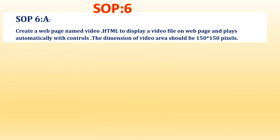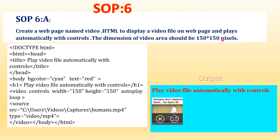Next is SOP 6, which has two parts, A and B. In Part A, create a web page named video.html to display a video file on the web page that plays automatically with controls. The dimension of the video area should be 150 by 150 pixels. It's an HTML5 program with title, head, body. BG color is cyan and text is red — that is optional. Give an H1 heading: 'Play Video File Automatically with Controls.'